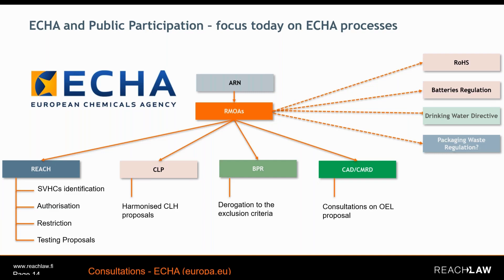You can find a similar list on ECHA's website. The different existing processes under which ECHA will run the secretariat of public participation in one way or another include REACH, CLP, the Biocidal Products Regulation, and CAD and CMRD — the occupational exposure legislation — where they can also run calls for evidence. Looking to the future, ECHA will also be running consultations under RoHS, the Batteries Regulation, the Drinking Water Directive, and likely the Packaging and Packaging Waste Regulation.